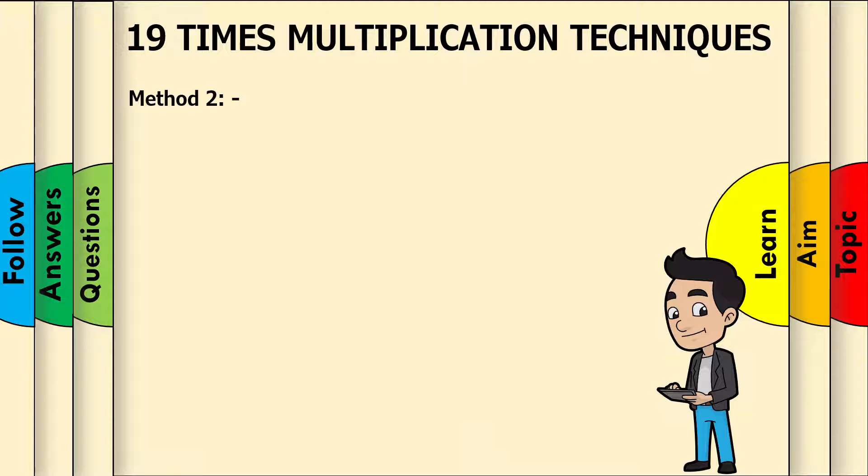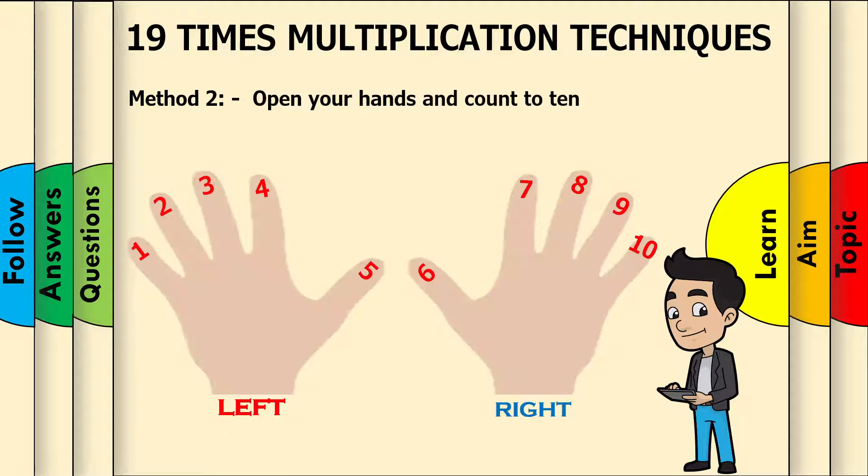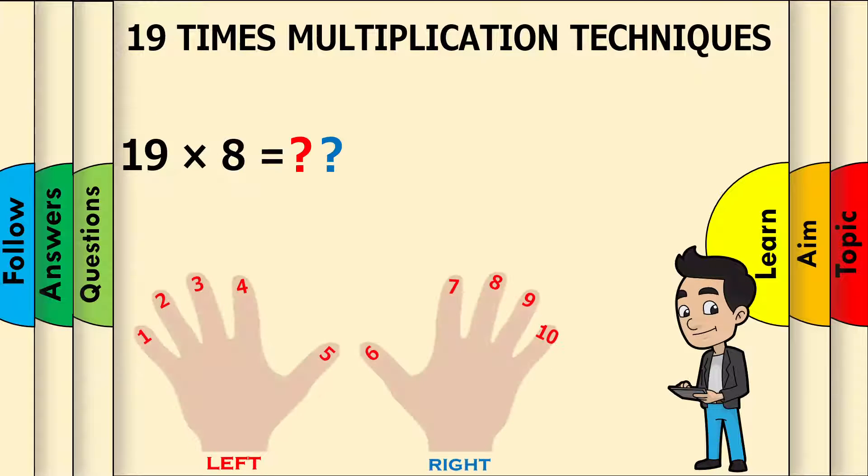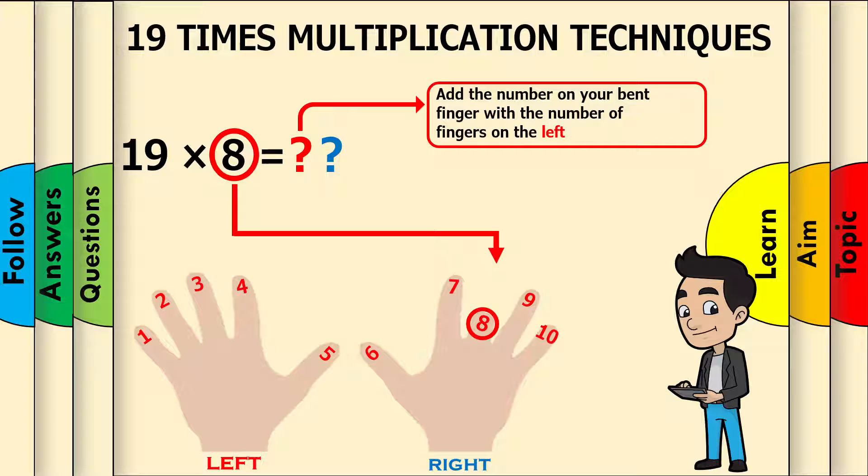Method 2: Open both of your hands and count to 10. Now let's take the question 19 times 8. Find your 8th finger and fold it. Now add the number on your bent finger with the number of fingers on the left. The number on your bent finger is 8, and the number of fingers on your left is 7. 8 plus 7 equals 15.